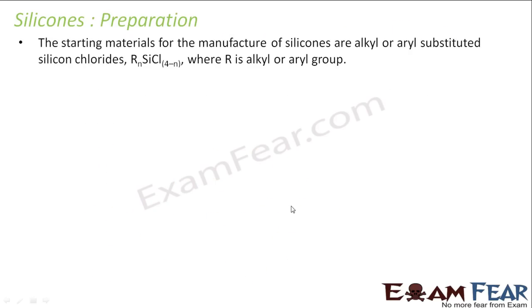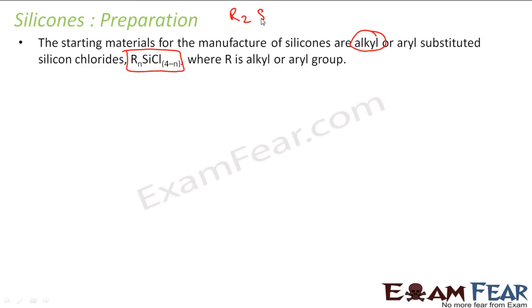Let's try to understand the preparation of silicones. The starting material for the preparation of silicones is alkyl or aryl substituted silicon chloride. For example, if n equals 2, it has to be R2SiCl2; if n equals 1, it has to be RSiCl3. This is what we'll use.